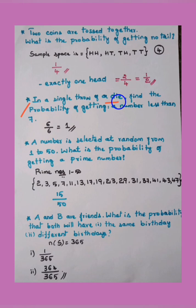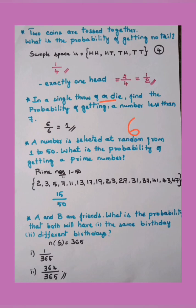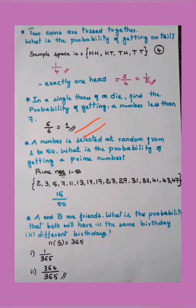Next: in a single throw of a die, find the probability of getting a number less than seven. A die has six sides, so the total is six. Numbers less than seven are one, two, three, four, five, six — all six numbers qualify. So six by six equals one. The answer is one.